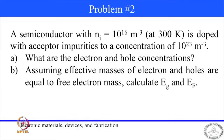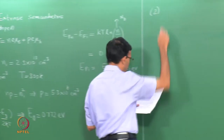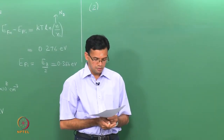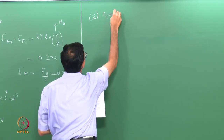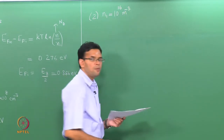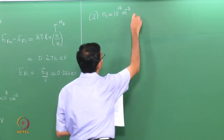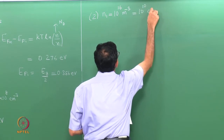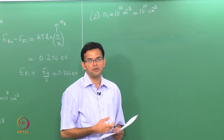Let us now move to question number 2. We have a semiconductor with N_i = 10^16 per meter cube. This is equivalent to 10^10 per centimeter cube, but for now we will work with per meter cube.